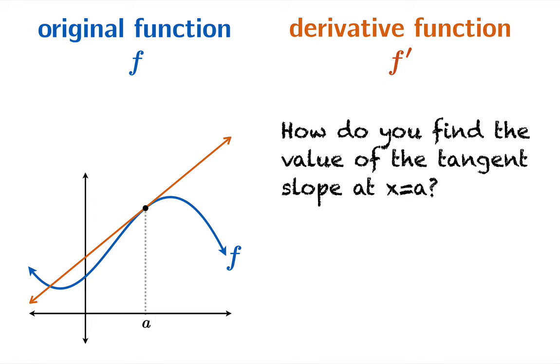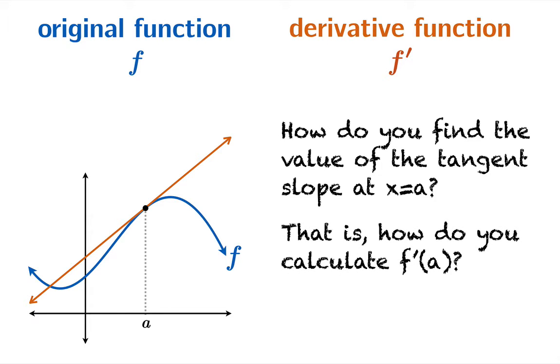So here's a question. How do you find the value of the tangent slope at an argument given the original function? In other words, how do you calculate f prime of a?